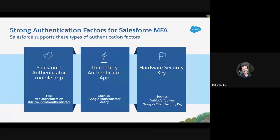For MFA, Salesforce supports only strong authentication factors — a factor that a user must have in their possession, like a code or a YubiKey. Users cannot use second factors like SMS or email for MFA, as it is easier to keep control of an actual mobile device or hardware security key than it is to infiltrate an email account or hack a cell phone number. Supported strong factors include the Salesforce Authenticator mobile app, third-party authenticator apps such as Google Authenticator or Authy, and hardware security keys such as YubiKey or Google's Titan security key.